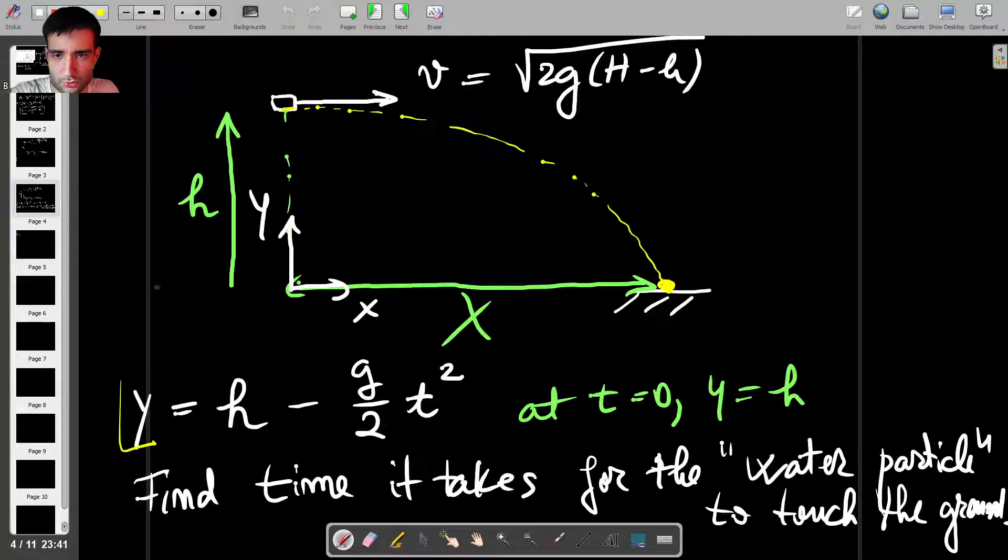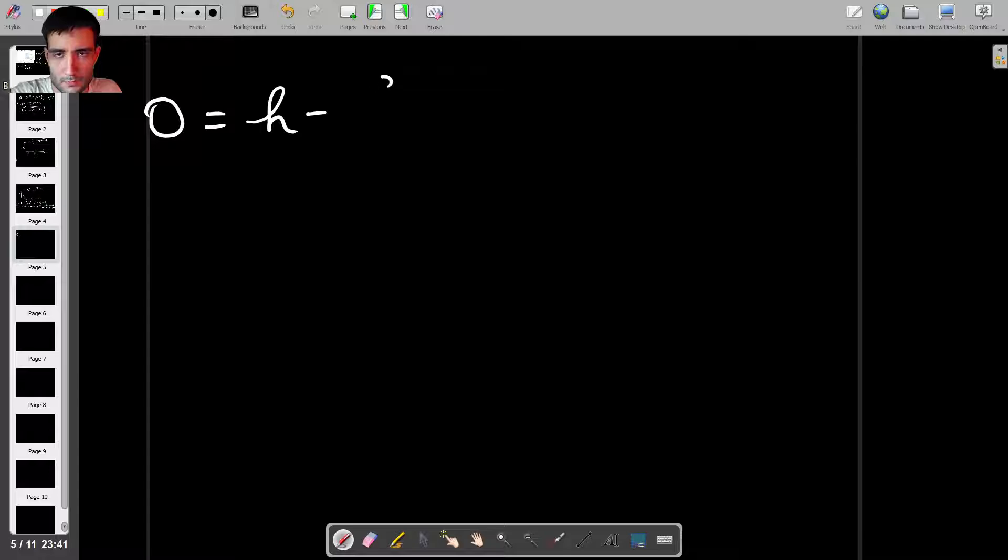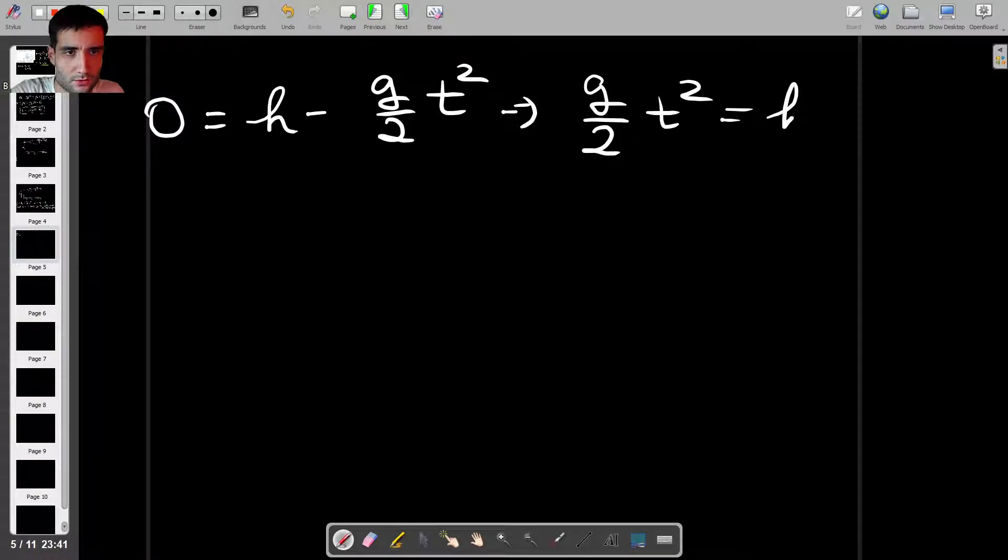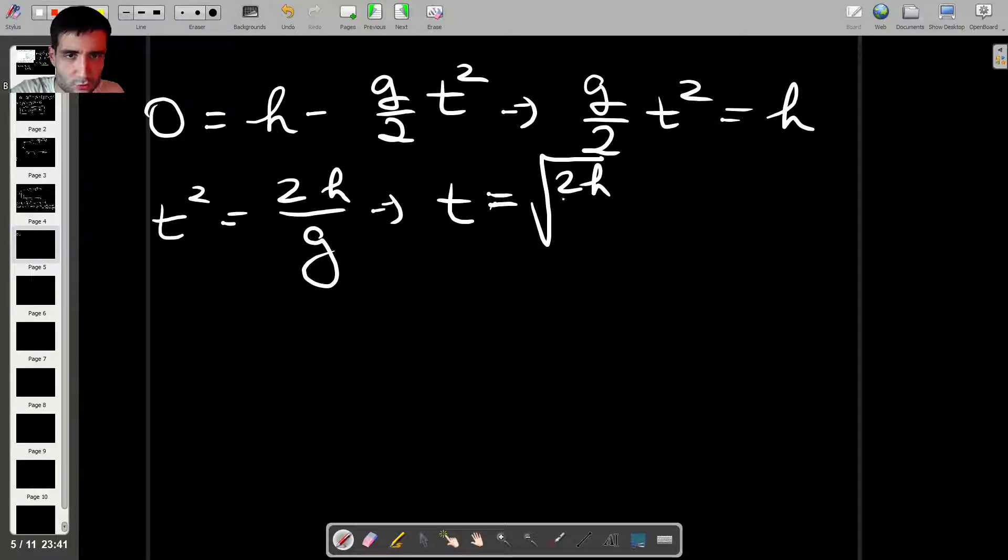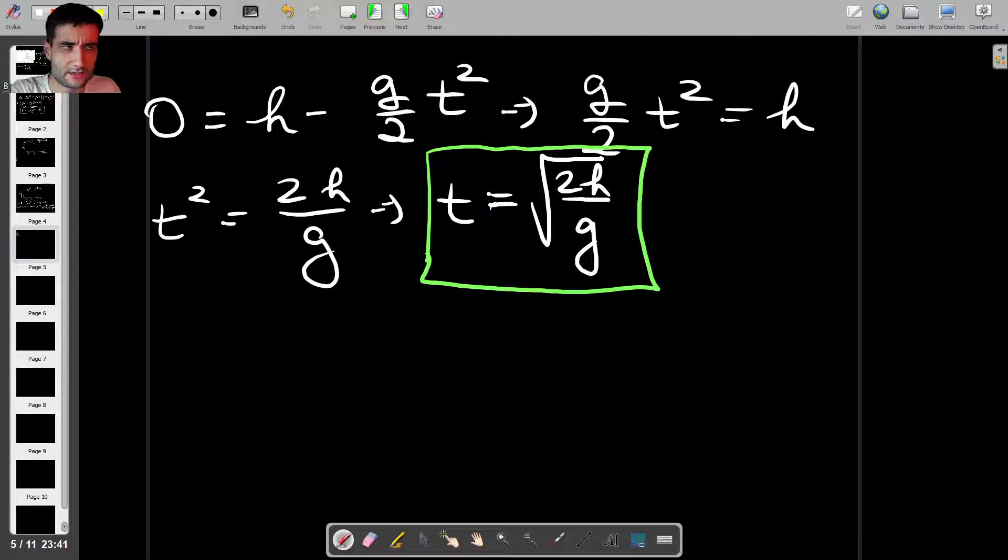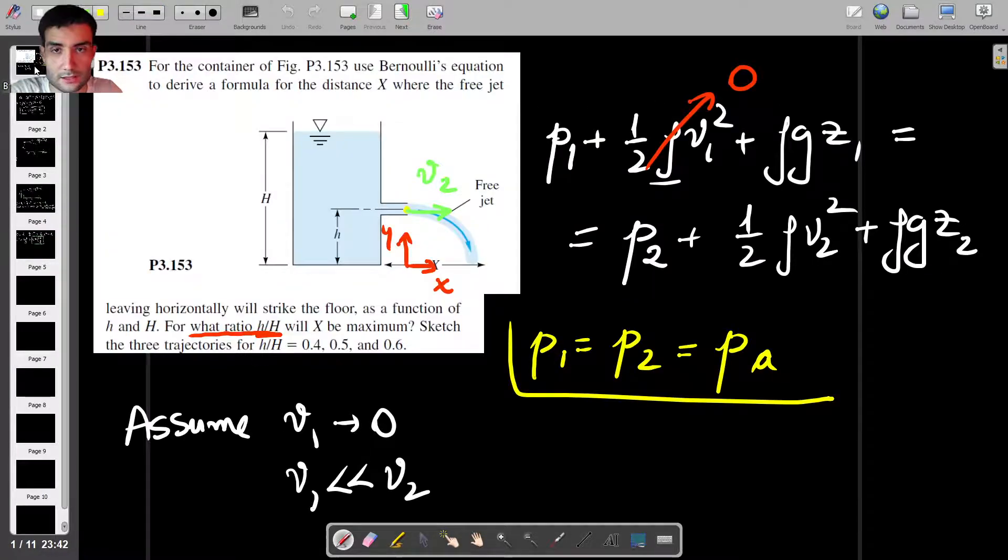With this in mind, we can actually find the time it takes for the water particle to touch the ground. To do this, all we have to do is just substitute Y with zero, because the water touches the ground here, and at this point, Y is equal to zero. We have zero equals to h minus G over 2T squared. This gives us G over 2T squared equals to small h, which means that T squared is equal to 2h over G. Therefore, T, the time is going to be equal to square root of 2h over G, which is interesting because it tells us that the time for the water to fall to touch the ground only depends on the height at which that orifice is located.